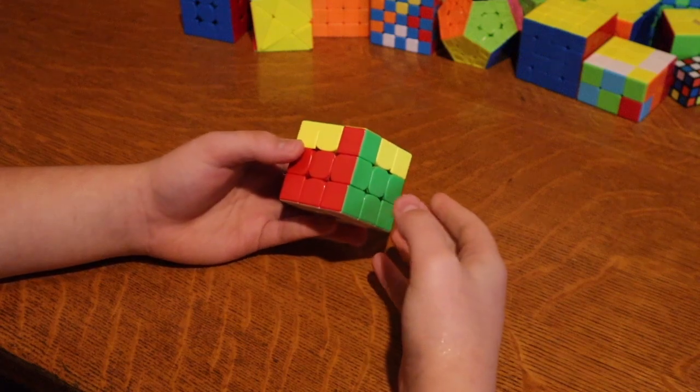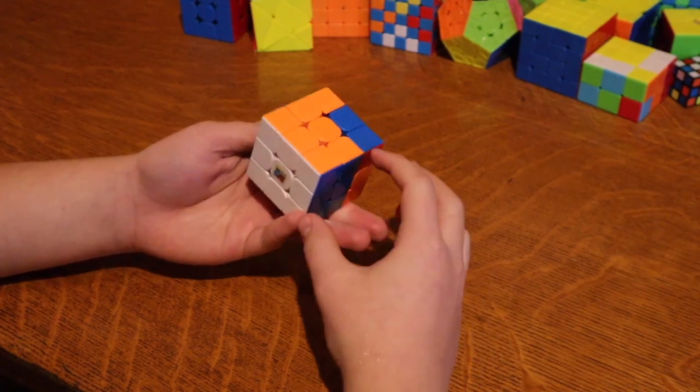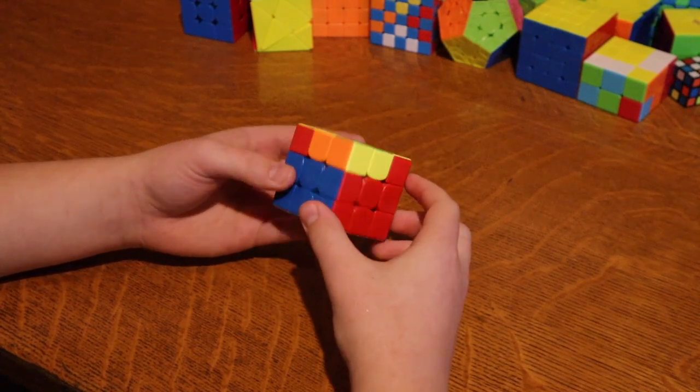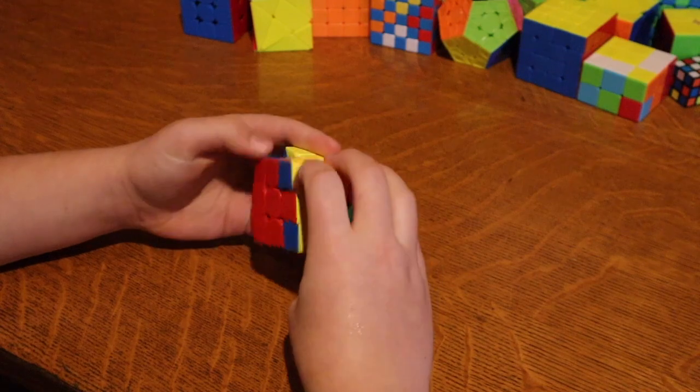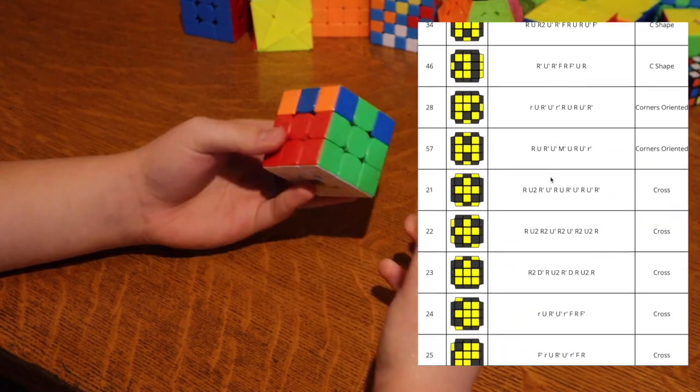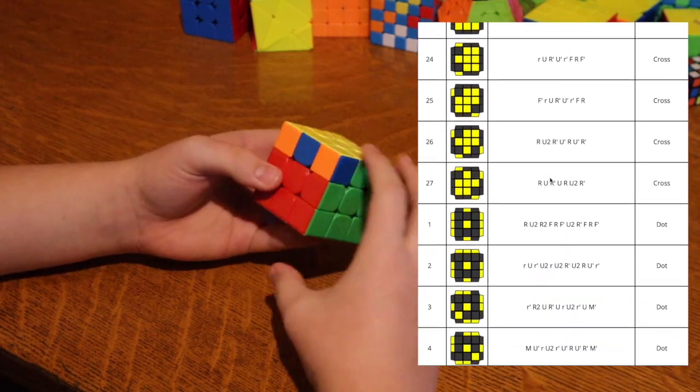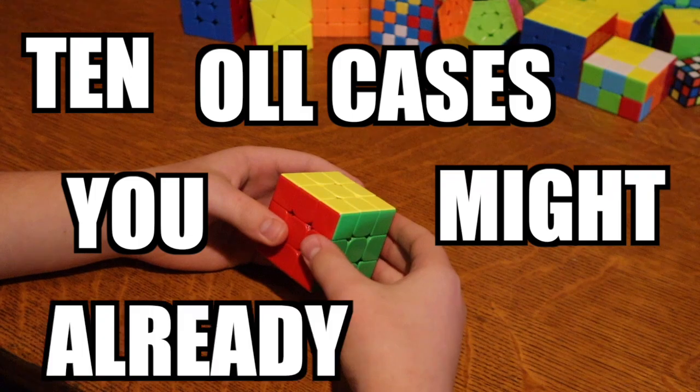So if you don't know what OLL is, it's basically the third step in the advanced CFOP method. It's where after you've solved the first two layers of the cube like this, you have a bunch of scrambled pieces on the top and you have to make the yellow pieces facing up like that. So there's more than 50 cases for that and if you want you can go and learn them. It'd probably take a while but I'm going to make it easier by showing you 10 cases that you might already know.